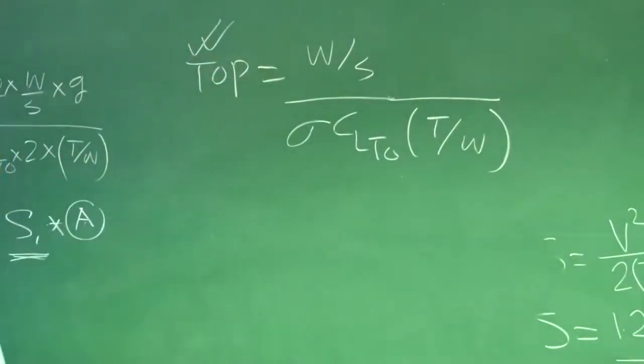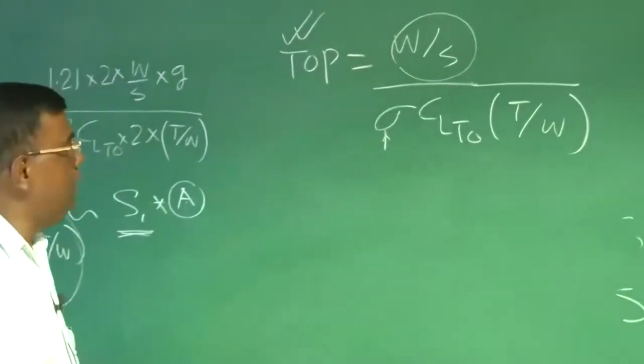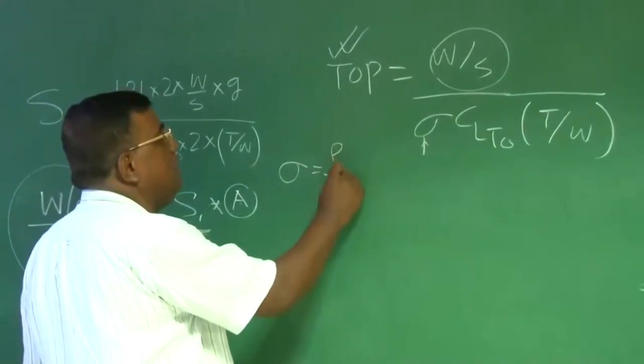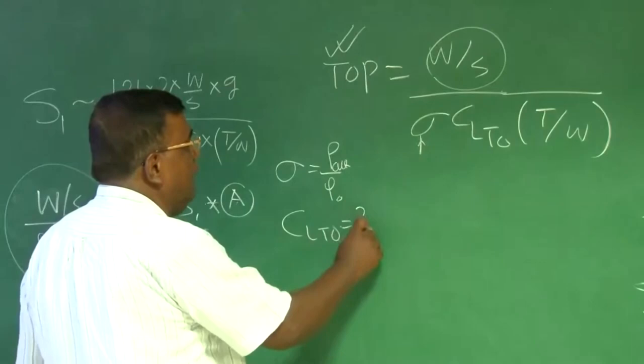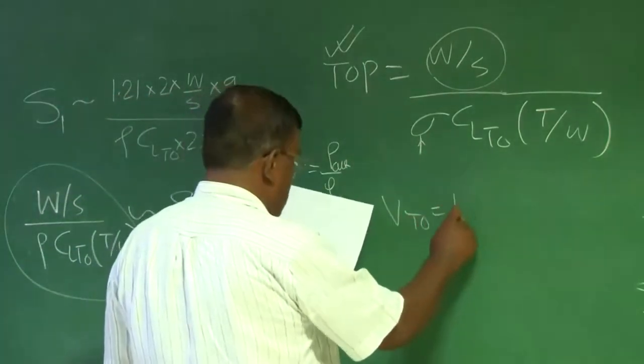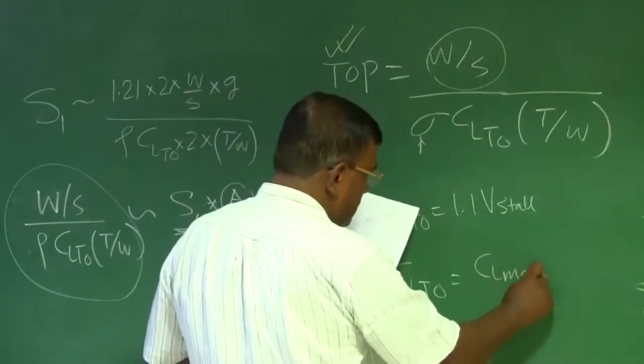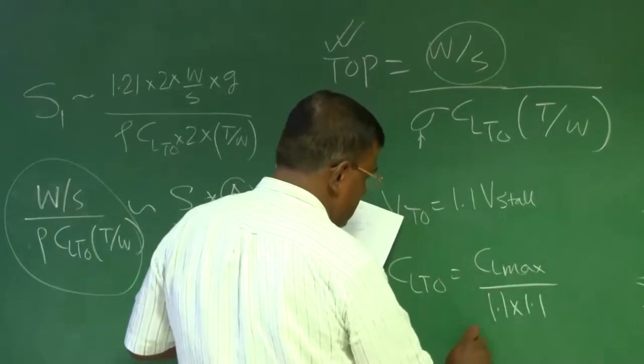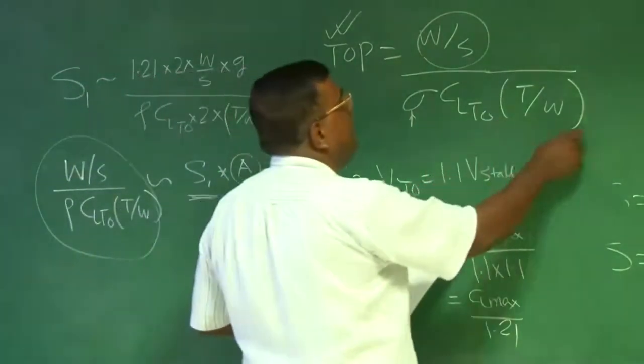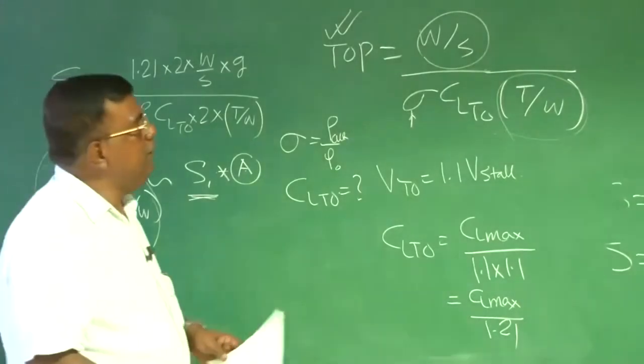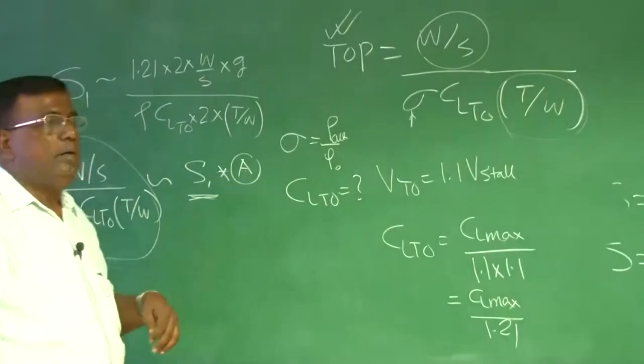I have picked this from historical data. My aim is to find out what is W/S for takeoff. σ is my control because depending upon what altitude I am taking off, I know density at that altitude and density at sea level. So this is in my hand. The question comes: what is C_L_takeoff? Since we know v_takeoff = 1.1 times v_stall, C_L_takeoff automatically becomes C_L_max / 1.21. So C_L_takeoff is also known. The question comes: what is the T/W value? Or for a designer, what is the combination of W/S and T/W to meet this takeoff requirement?